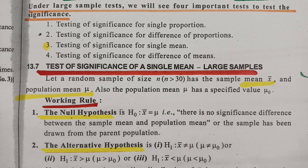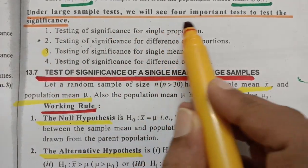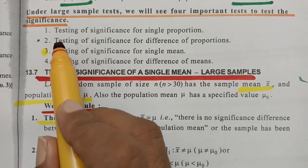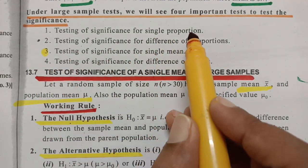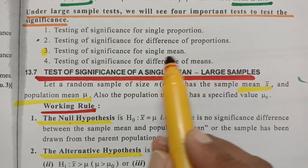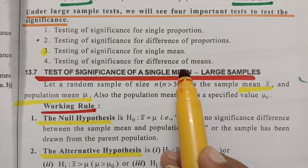It will be very helpful if you follow this video right till the end. The topic today is from tests of hypothesis, large samples of statistics. There are usually four types of tests under large samples. We see the four important tests to test the significance: testing of significance for single proportion, difference of proportions, single mean, and difference of means. There are four types here.